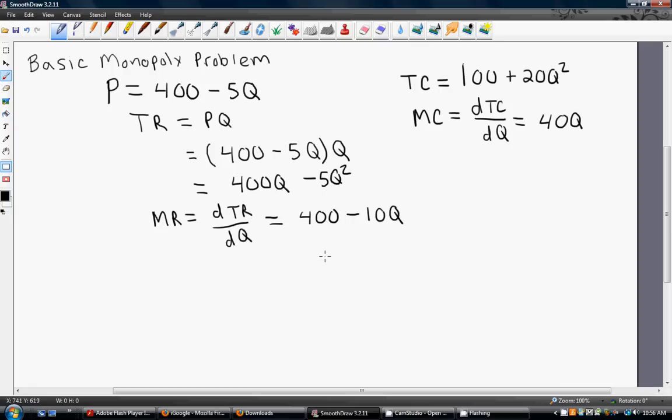So, to maximize profits, we are just going to set marginal revenue equal to marginal cost. Marginal revenue is 400 minus 10Q. Marginal cost is 40Q. We will collect the Q terms and we get 50Q equals 400 or Q equals 400 divided by 50 or 8.